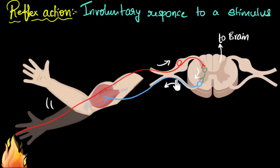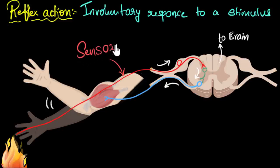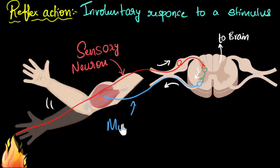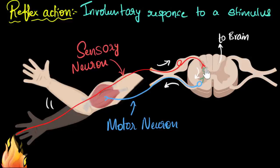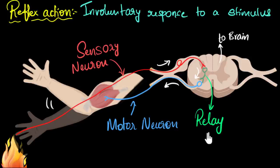The last thing to do is label this diagram. This big neuron that senses the stimulus, we call it the sensory neuron. The neuron that acts on the muscle, makes it contract and makes your hand move, is called the motor neuron — it's called that because it's causing motion. And the neuron that transfers the information from the sensory neuron to the motor neuron in the spinal cord is called the relay neuron. Relay means transfer of information. And of course, this is our spinal cord.